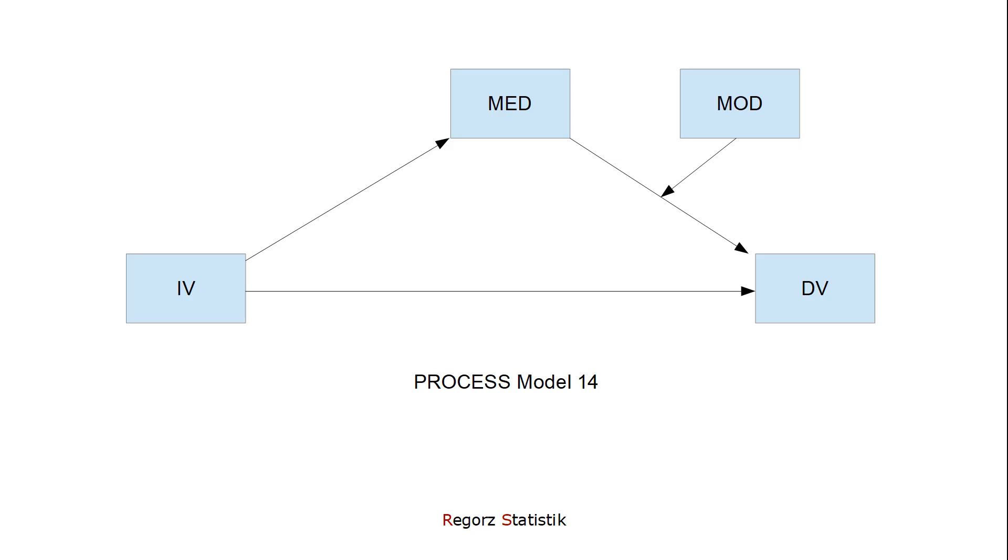In this video, I'm going to show you how to interpret the output of Hayes Process Model 14, a moderated mediation with a moderated B path, even though in most cases for this scenario I would prefer Model 15.